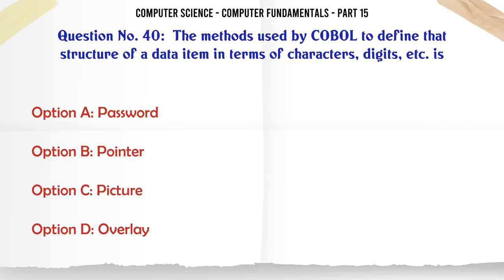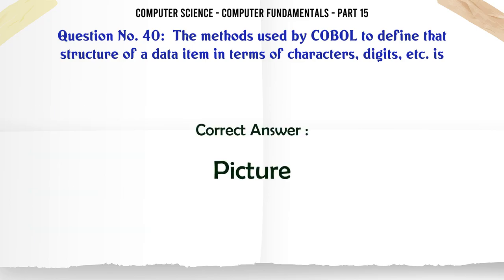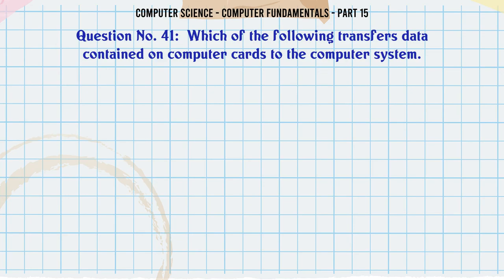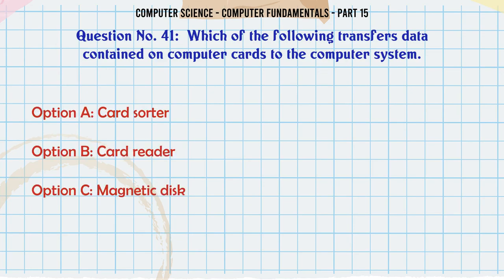The method used by COBOL to define the structure of a data item in terms of characters, digits, etc. is: A. Password B. Pointer C. Picture D. Overlay. The correct answer is Picture.